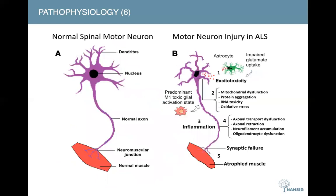This next slide is less busy and aims to show the changes the disease brings at the cellular level. As we can see on the right-hand side, over time the motor neurons progressively damage and die, causing the muscles to undergo atrophy, and patients lose the ability to speak, eat, move, and even breathe.